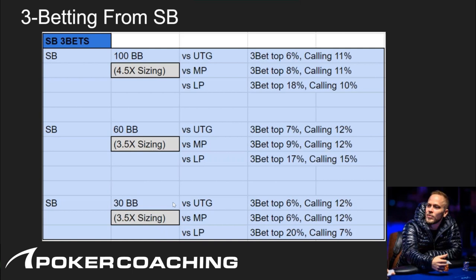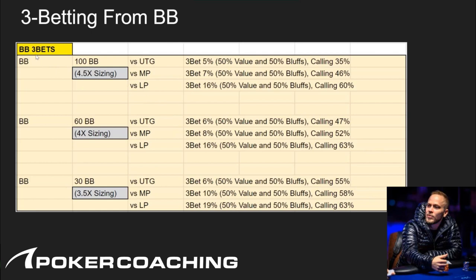At 30 big blinds we're still using 3.5x from the small blind, but this is the stack size where we really can't three-bet bluff a lot because the opponent can just four-bet shove. So it has to be more value-oriented. Top 6% three-bet, top 6%, and top 20% calling 12-12.7%. For big blind three-bets we're using slightly larger sizing: 4.5, 4, and 3.5 across stack sizes — very tight versus UTG, and using a 50/50 value-to-bluff ratio, so we go polar.